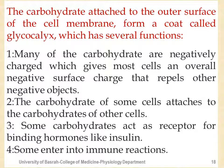The carbohydrates attached to the outer surface of the cell membrane form a coat called the glycocalyx, which has several functions. Many of the carbohydrates are negatively charged, giving most cells an overall negative surface charge that repels other negative objects. It acts as a gatekeeper to help the cell membrane select the passage of ions and substances. The carbohydrates of some cells attach to carbohydrates of other cells, serving as communication between cells. Some carbohydrates act as receptors, like proteins, to bind hormones and neurotransmitters, and some can help in immune reactions.